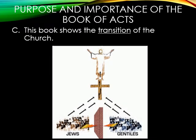Letter C: this book shows the transition of the Church. The Gospel was first preached to the Jews — in fact, the early Church was primarily a Jewish Church. And then it gradually spread into the Gentile world until all of us were included. Today, the Church is primarily a Gentile Church.